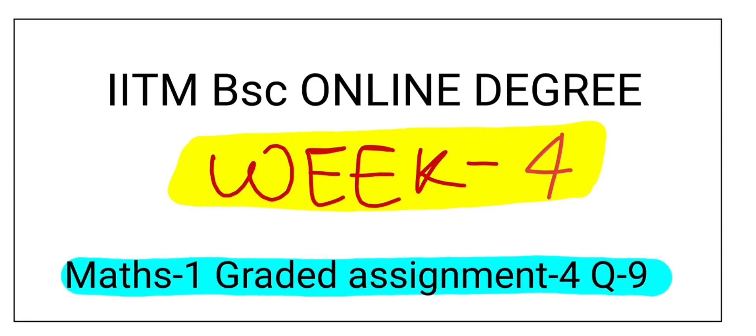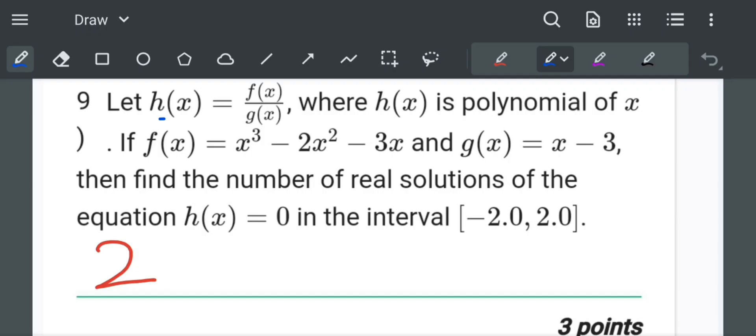Hello everyone, in this video we are going to discuss week 4 mathematics graded assignment question number 9. Let's begin. In this question, given let h of x equal to f of x divided by g of x, if f of x equal to x cube minus 2x square minus 3x and g of x is also given.